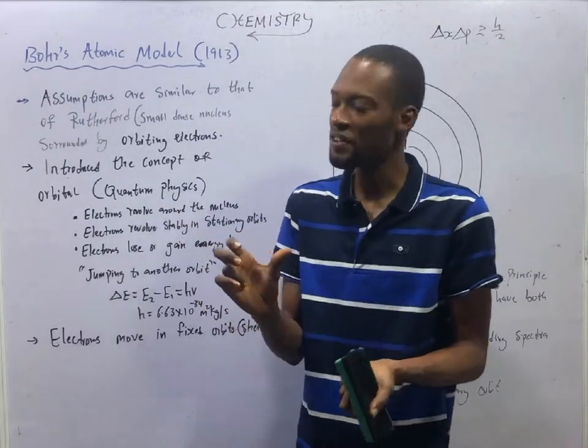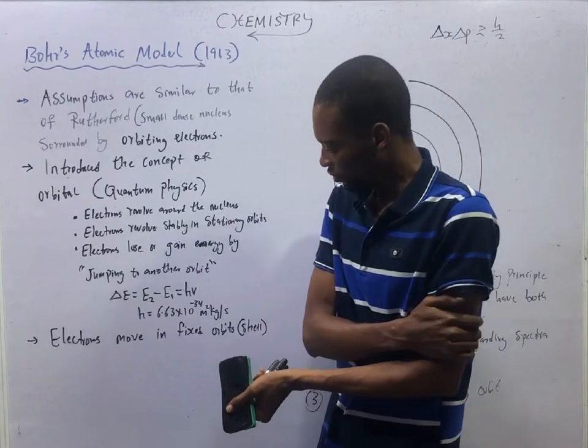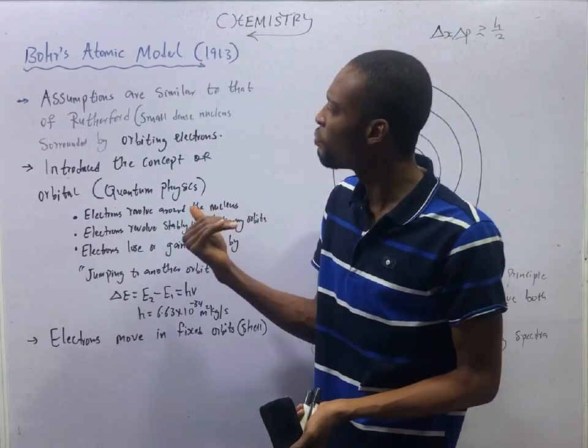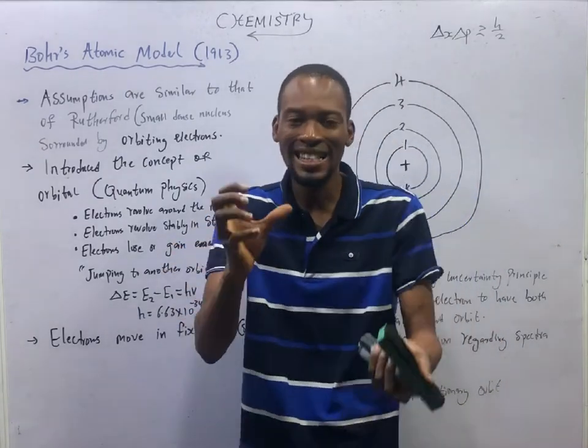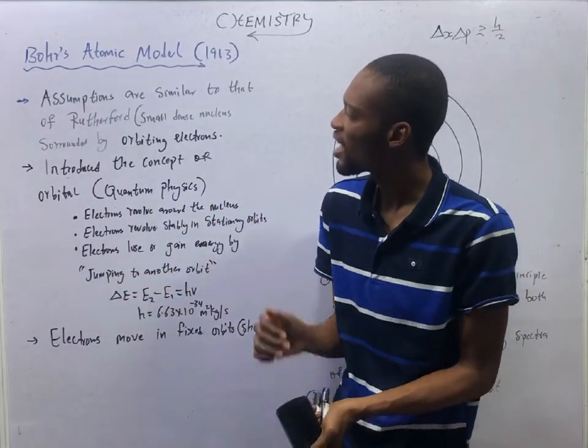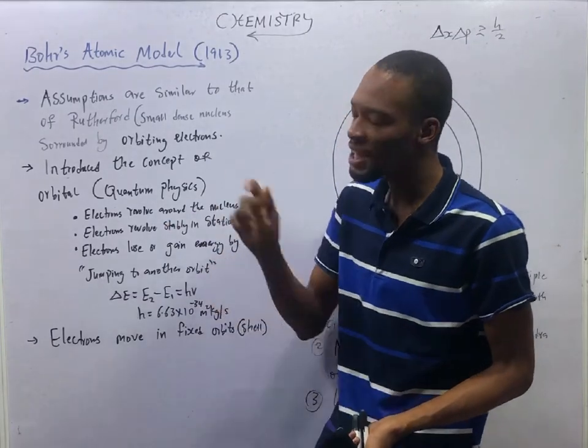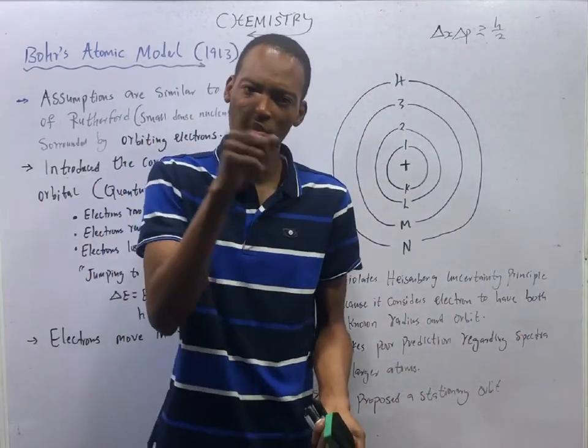Now let's take a look at Bohr's atomic model. The assumptions in Bohr's atomic model are similar to what Rutherford proposed, which is that the atom has a small dense nucleus and electrons are orbiting around the atoms.